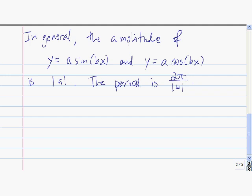In the last two examples I showed you specific examples of finding the period and the amplitude. In general, if you have y equals a sine of bx or y equals a cosine of bx, the amplitude is the absolute value of a, and the period is 2pi over the absolute value of b.